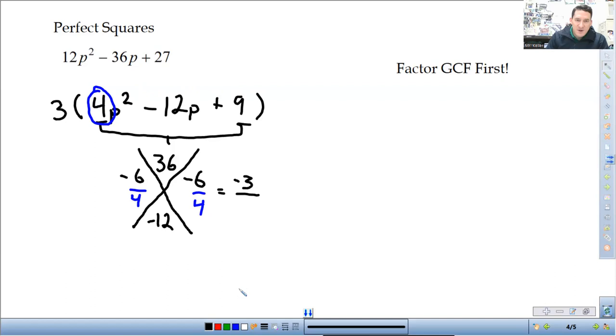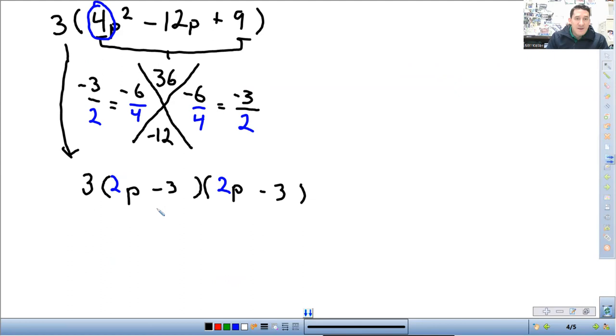So, it's going to be negative 6 over 4. Reduce it. It becomes negative 3 over 2. Same thing over here. Negative 3 over 2. And then, I can put those in the parentheses. So, it's going to be p. The 2 is going front. The bottom numbers in those fractions go in front. And then, it's going to be minus 3. Don't forget to bring down the 3 from the original, our first layer of factoring.